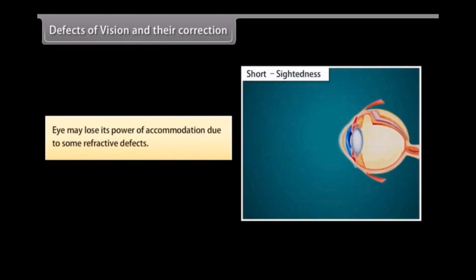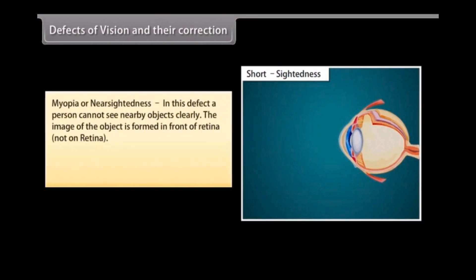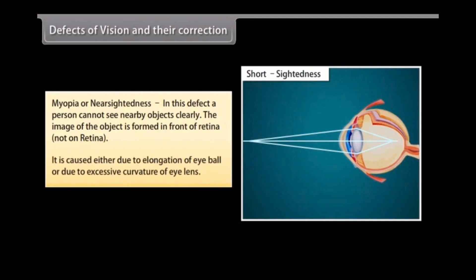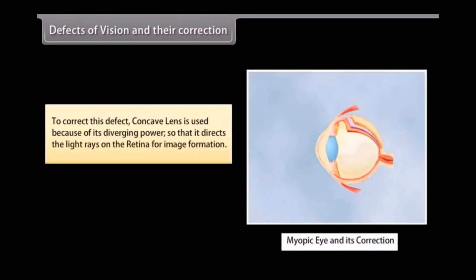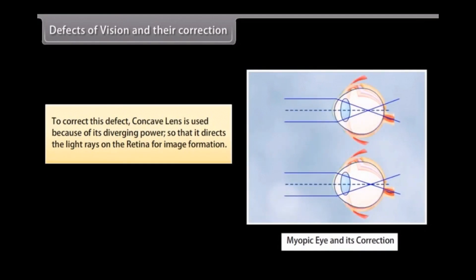The eye may lose its power of accommodation due to some refractive defects. Myopia, or near-sightedness, is a defect in which a person cannot see distant objects clearly — the image of the object is formed in front of the retina. It is caused either due to elongation of the eyeball or excessive curvature of the eye lens. To correct this, a concave lens is used, which diverges light rays so that they fall on the retina.